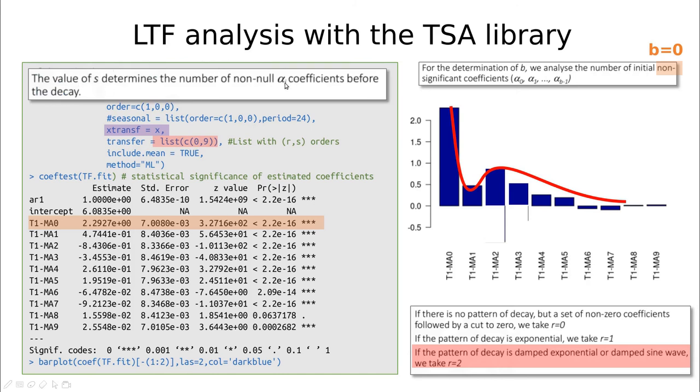To determine s, we have to determine the number of non-null coefficients alpha before the decay. We have identified this decay here, and again in this case we don't have anything before the decay, so that means that s equals zero. You can see again that this is a kind of part science and part art, but you need a lot of practice in order to handle the situation.